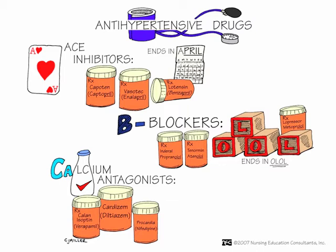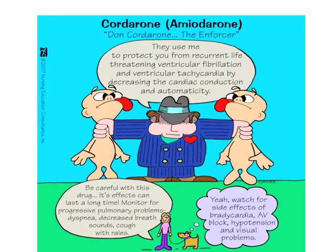Calcium antagonists such as amlodipine, nifedipine, and verapamil are also good anti-anginal drugs. They are not popular in heart failure because they can worsen lower extremity edema, so they would not be used in those patients. However, they are very good for patients with atrial fibrillation with a high heart rate, where you need rate control. They work by lowering blood pressure and lowering heart rate.